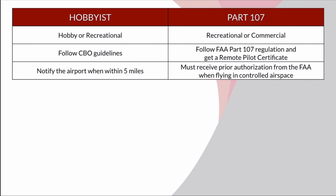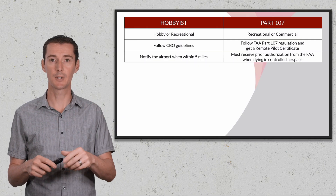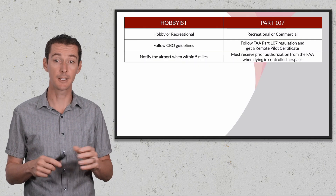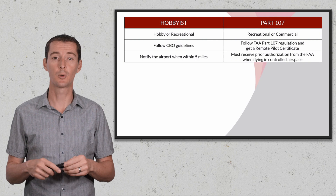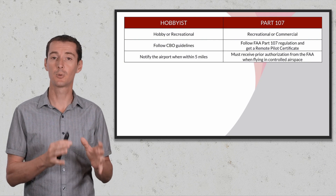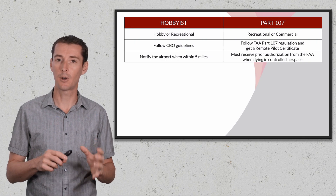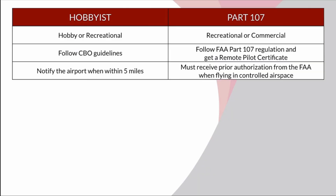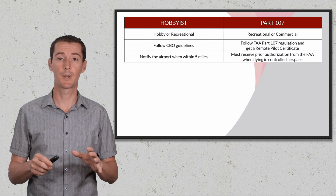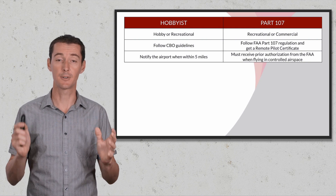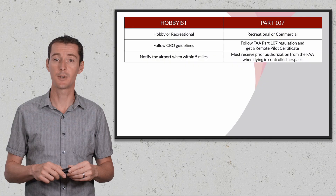Under hobbyist rules you follow Part 101 and CBO guidelines; under Part 107 you follow FAA regulation under Part 107, which is a bit more extensive. For notification: under hobbyist rules you must notify an airport if you are within five miles of it — there are tools I'll show you later in the course. Under Part 107, you have to get prior authorization if you're flying close to an airport in controlled airspace. There are different sets of rules for flying as Part 107 versus as a hobbyist.